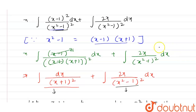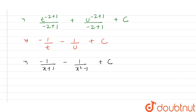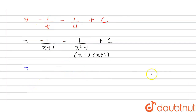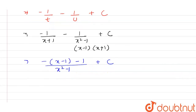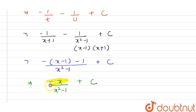Now, x² - 1 can be written as (x - 1)(x + 1). Taking the LCM, this becomes -[(x - 1) + 1] / (x² - 1) + c. Simplifying, the -1 and +1 cancel, leaving us with -x / (x² - 1) + c. So this is the required answer for this question. I hope you guys like it, thank you.